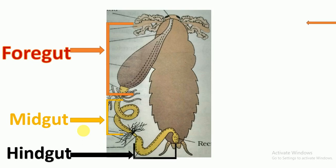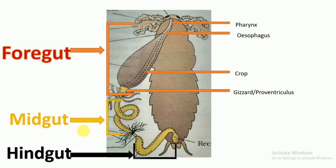The foregut includes the pharynx, esophagus, crop, and gizzard or proventriculus. At the junction of the foregut and midgut, a pair of 6-8 blind tubules called hepatic ceca are present. At the junction of the midgut and hindgut, 100-150 yellow-colored filamentous structures called Malpighian tubules are present.